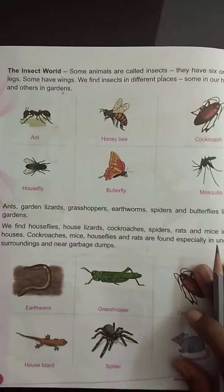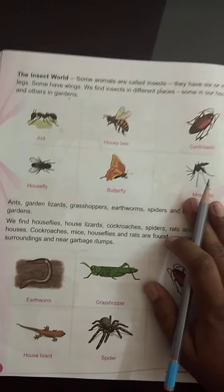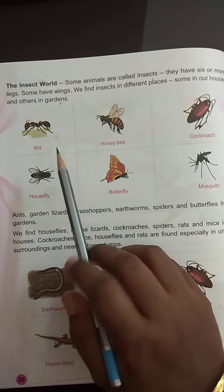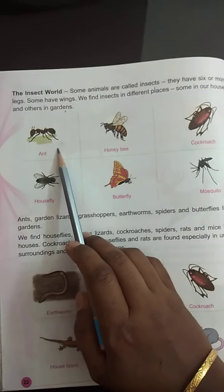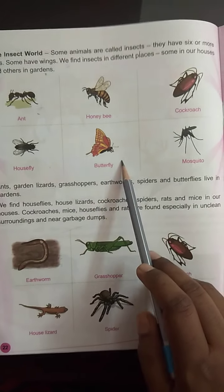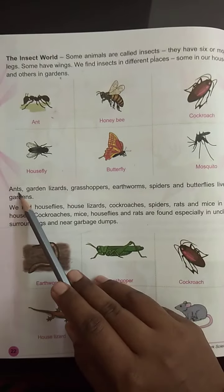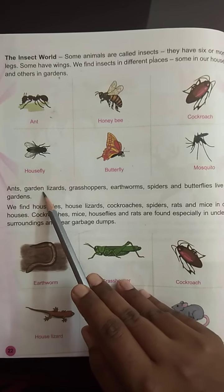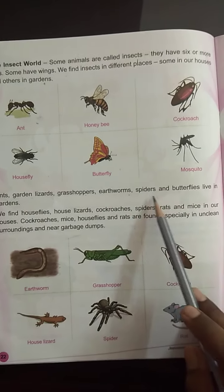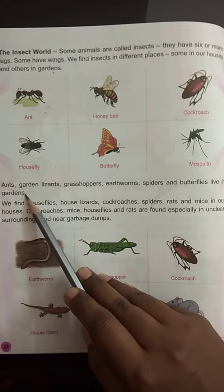There are insects found in the house and others in the garden. Insects we will learn about include Honeybee, Cockroach, Housefly, Butterfly, and Mosquito. In gardens, we find Grasshoppers, Earthworms, Spiders, and Butterflies.